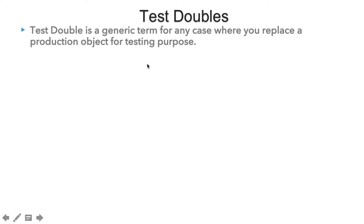We discussed the test double in our previous lecture. A particular class can be dependent on any other class which usually talks to a database, goes over a network, or communicates with external servers. When we do unit testing of that particular class, those external dependencies come into picture. Instead of bringing those external dependencies, we bring the test double of those dependencies. A test double is a generic term for any case where we replace a production object for our testing purpose.